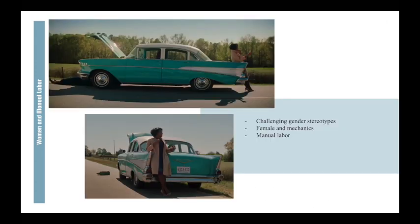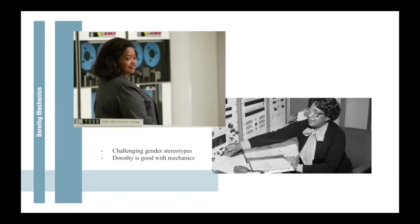Catherine Johnson, Dorothy Vaughn, and Mary Jackson are the names of the three black women that worked for NASA. Early on in the movie, we see Dorothy fixing their car engine on the side of the road after it breaks down on their way to work. This challenges gender stereotypes, as men are overrepresented in manual labor jobs, including mechanical work. Seeing a young woman like Dorothy excel in this type of work challenges gender stereotypes. We also see Dorothy working with an IBM mainframe computer later in the movie, and she clearly excelled in this type of work, but the other employees at NASA find it hard to believe she knew what she was doing.